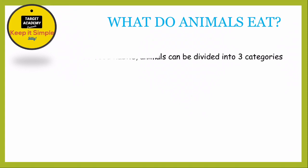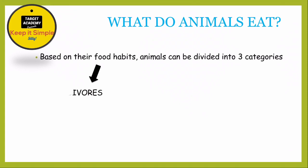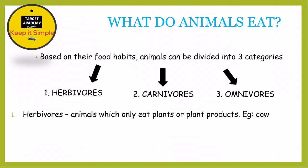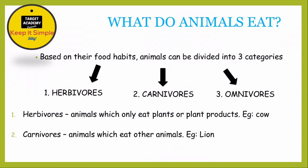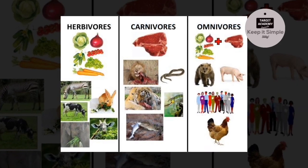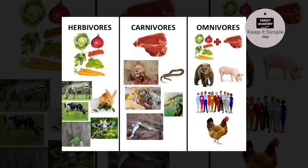Our second source of food is animals. Based on their food habits, animals can be divided into three categories: herbivores, carnivores, and omnivores. Herbivores are animals which only eat plants or plant products — for example, the cow. Carnivores are animals which eat other animals, mainly herbivores — for example, the lion or tiger. Omnivores are animals which eat both plants and animals — like dogs or humans.